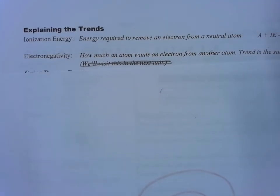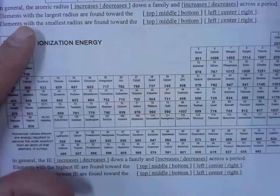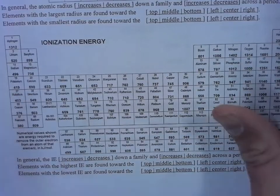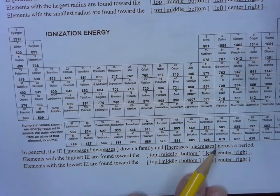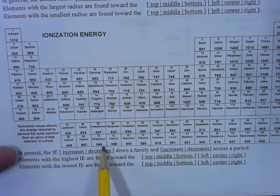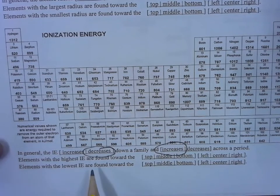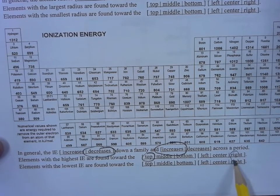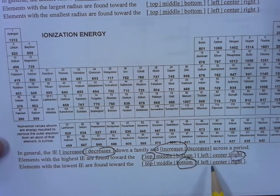Let's identify the trends. In general, ionization energy decreases down a family and increases across a period. Elements with the highest ionization energy are found at the top right. Elements with the lowest ionization energy are found at the bottom left.